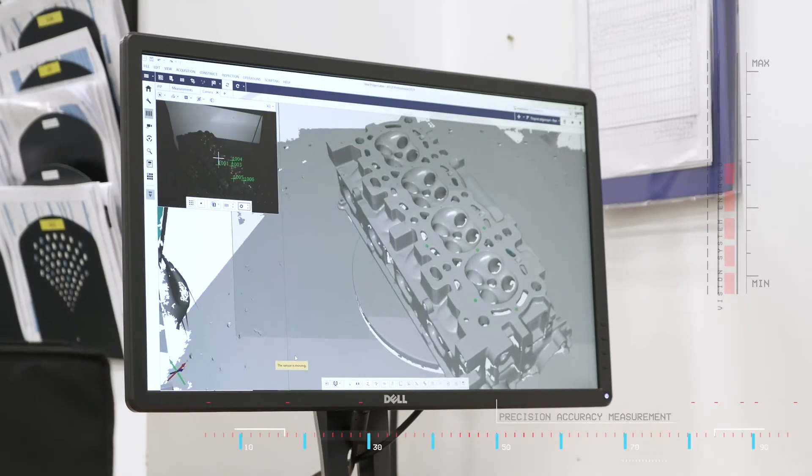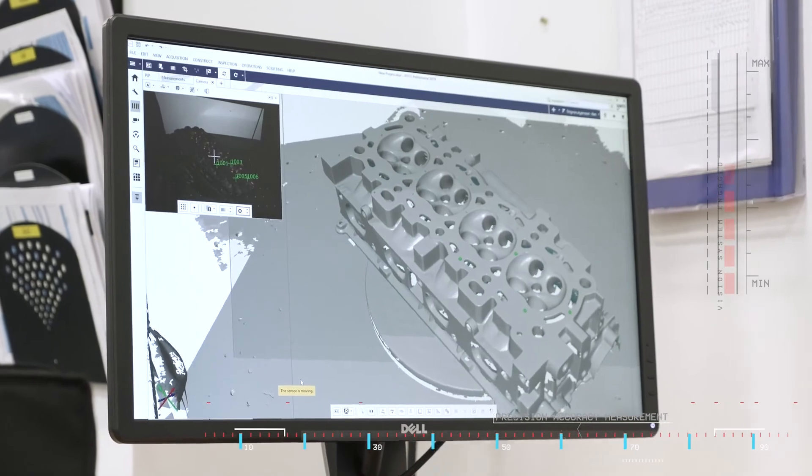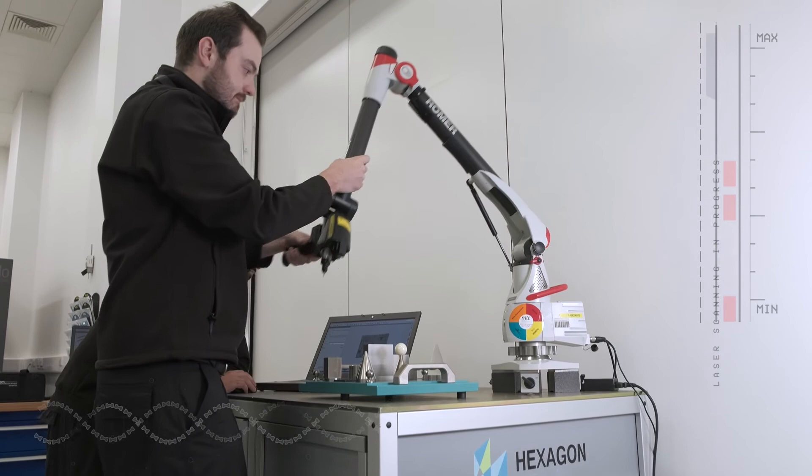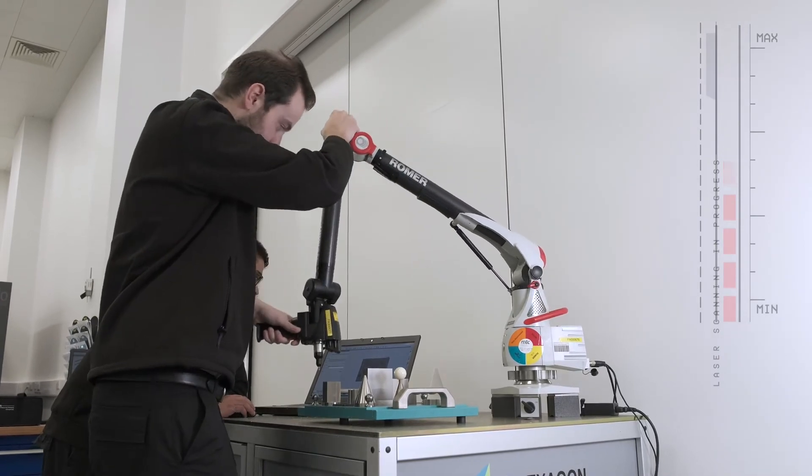In addition to the capabilities that we have within the lab, we have a number of portable metrology systems that allow us to go out and measure large volume components such as aerostructures, wing sections, etc.